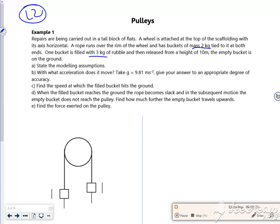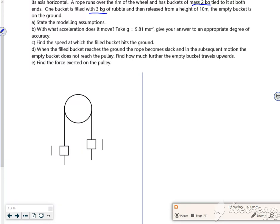One bucket is filled with 3kg of rubble. So I've got one which is 2g, well that's the empty one, and one which is full which is now 5g.